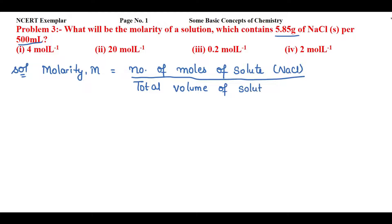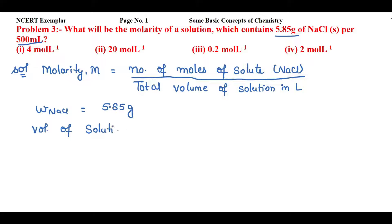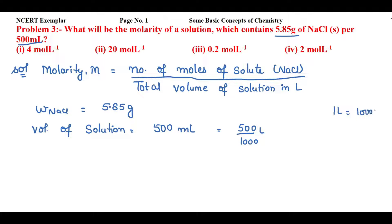Let's note the given values. The actual mass of NaCl, w(NaCl), equals 5.85 grams. The volume of solution is 500 mL. My first target is to convert 500 mL into liters. I know that 500 mL equals 500 divided by 1000, because 1 liter equals 1000 mL.